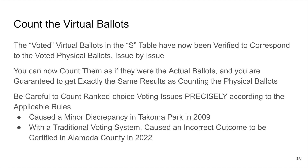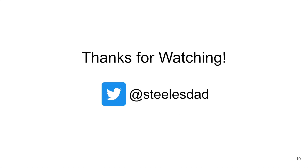You can now count the virtual ballots as if they were the actual ballots, and you are guaranteed to get exactly the same results as counting the physical ballots. One caveat, however: be careful to count rank-choice voting issues precisely according to the applicable rules. This caused a minor discrepancy in Tacoma Park in 2009, and with a traditional voting system, it caused an incorrect outcome to be certified in Alameda County in 2022. See the link in the description for details. If you understand the switchboard now, please leave a comment to let me know how many times you had to watch the video before it clicked for you. You can also tweet at me at Steele's Dad. Thank you for watching, and have yourself a great day.